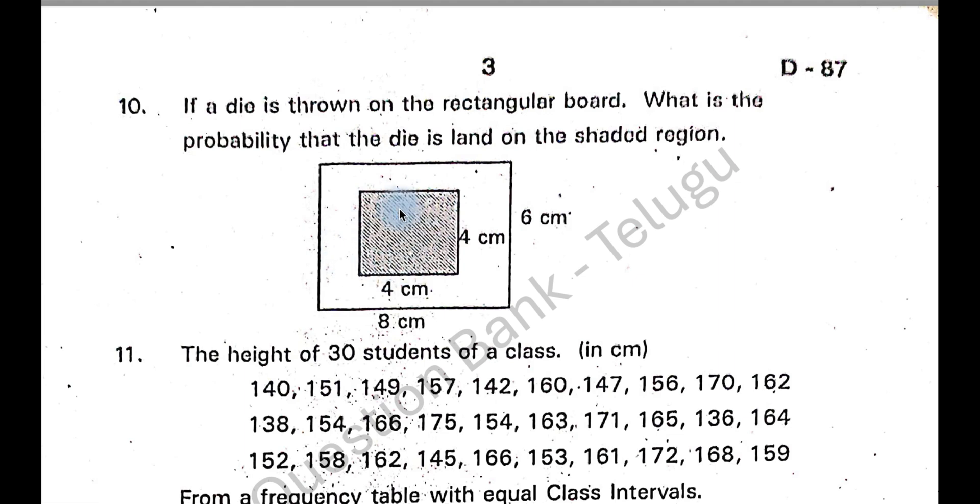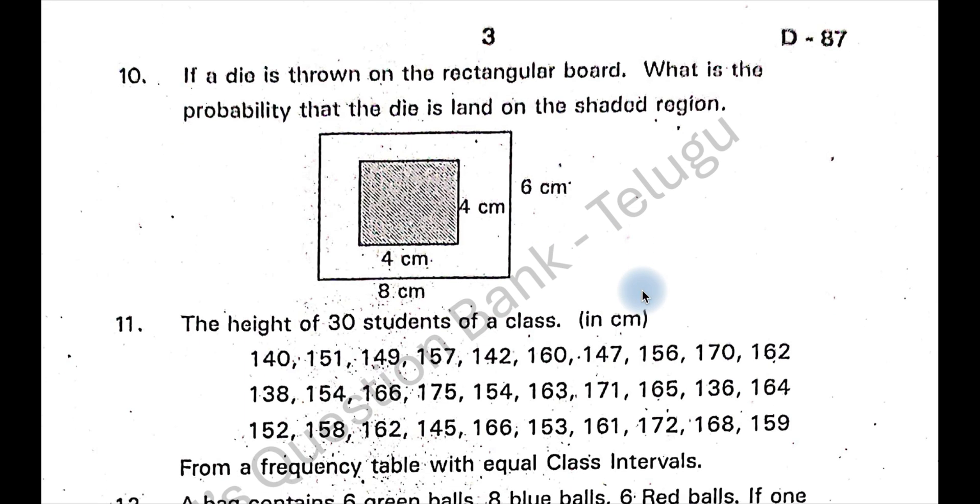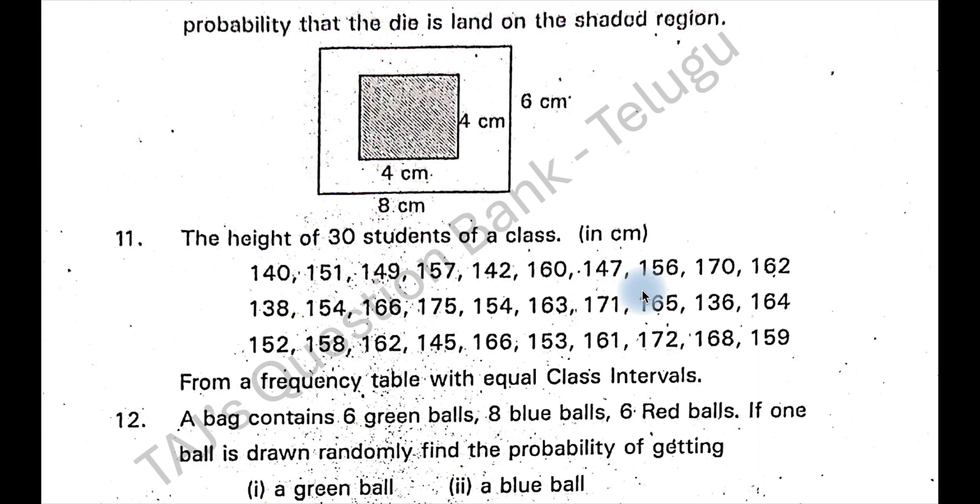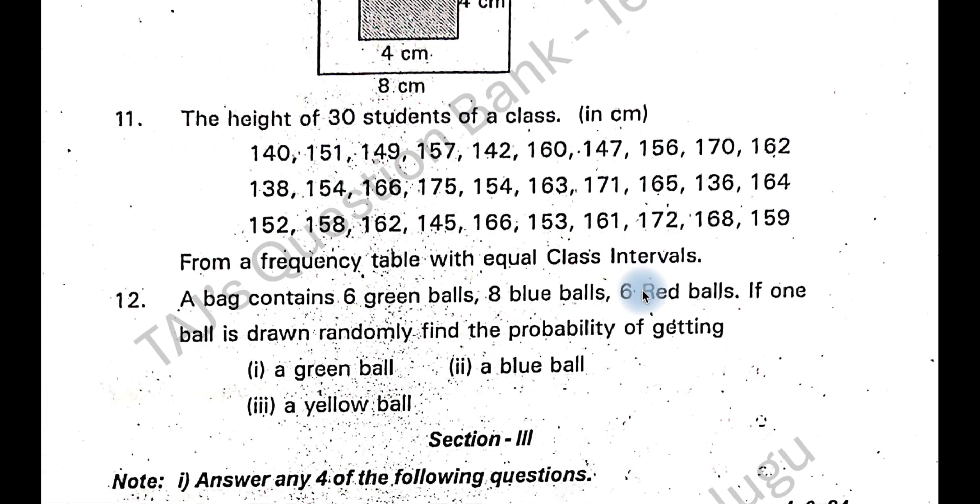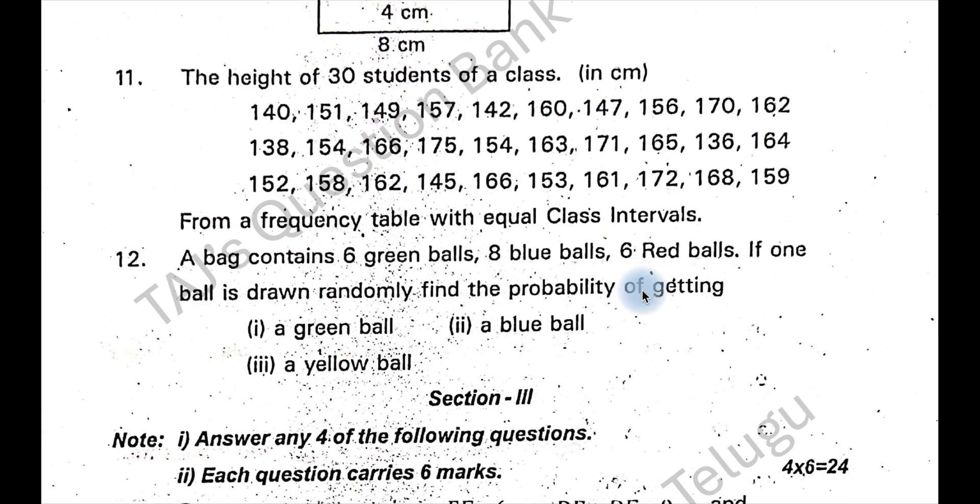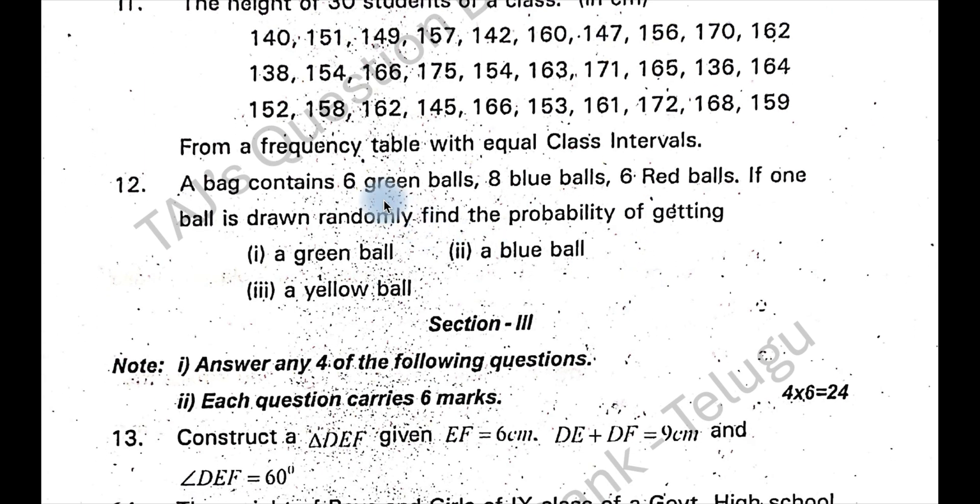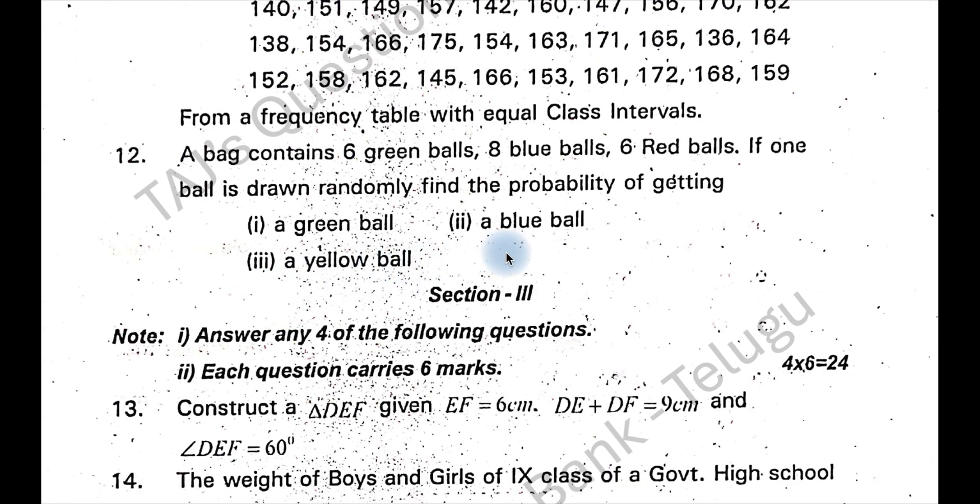The probability is area of this by area of total area, so 16 divided by 48, so how much is that? 1 by 3. So total number of balls is 20. The probability of getting a green ball is 6 by 20 that is 3 by 10. A blue ball is 8 by 20 which is 2 by 5. And a yellow ball, you don't have a yellow ball, then the probability is 0.